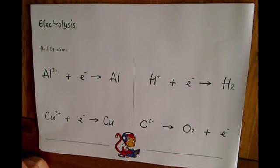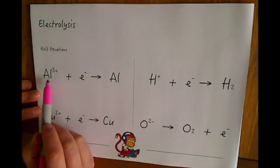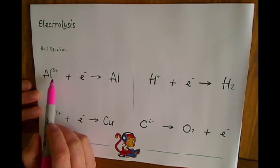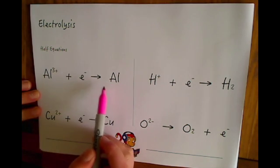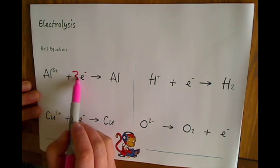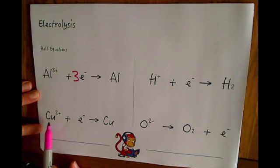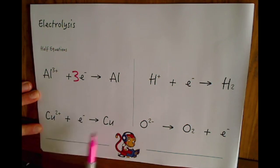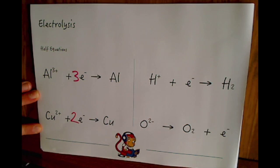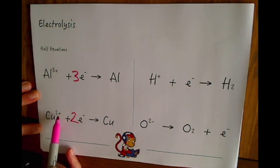Okay, so let's see how you got on. The first one Al3+ to turn that into aluminium we will need three electrons. For the next one down below Cu2+ to turn that into copper we will need two electrons because we've got 2+ here so we need two minuses.